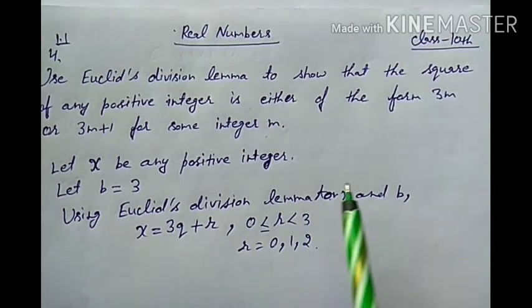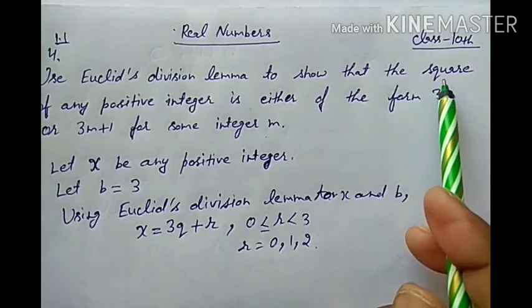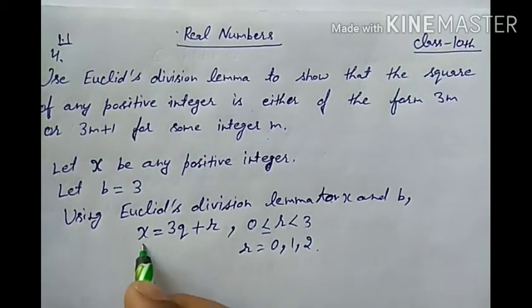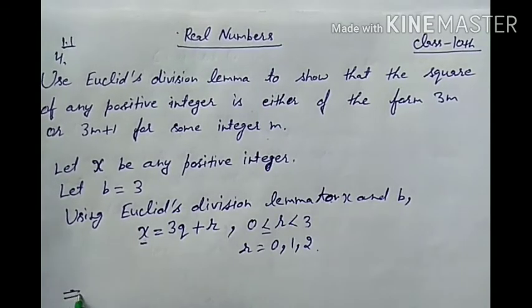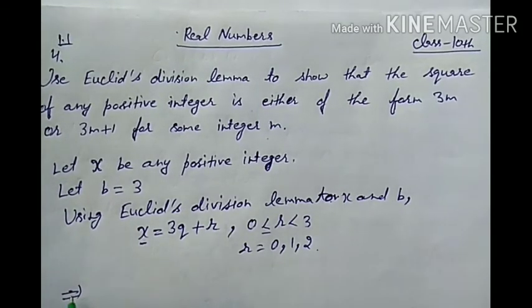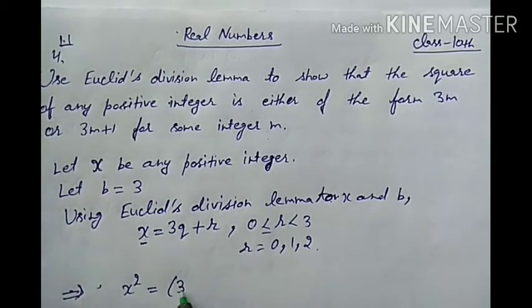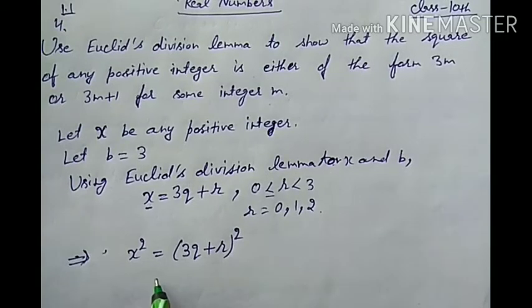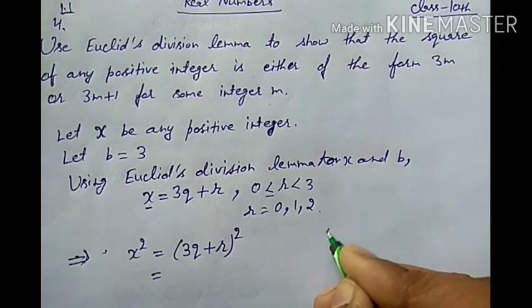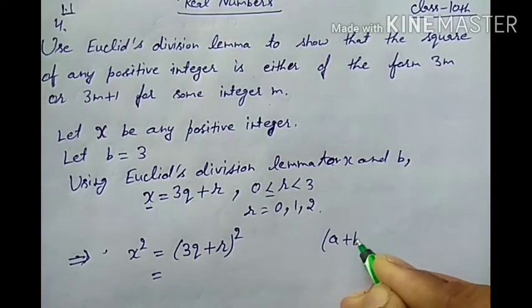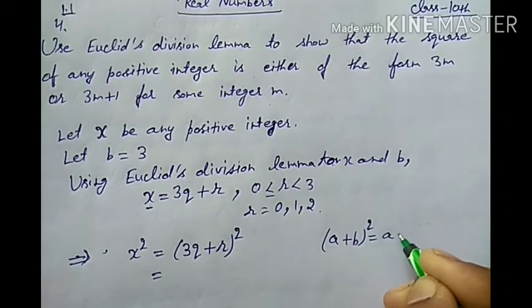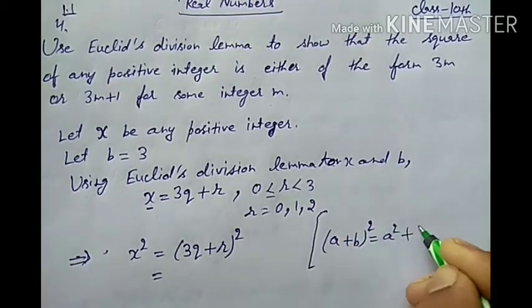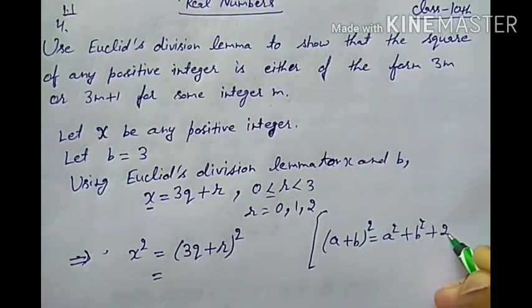But in our question we have to show the square of any positive integer. So squaring both sides, we get: x squared is equal to 3q plus r, whole square. We will use the identity: a plus b whole square is equal to a squared plus b squared plus 2ab.